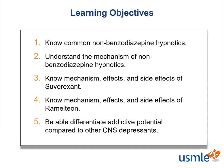So what are our goals today? We're going to learn about common benzodiazepine hypnotics, understand the mechanism of non-benzodiazepine hypnotics, then focus on suvorexant and understand its mechanism, effects, and side effects. Finally, we'll focus on ramelteon and learn its mechanism, effects, and side effects. At the end, we'll put it together and differentiate these drugs compared to other addictive CNS depressants. So without further ado, let's get started.